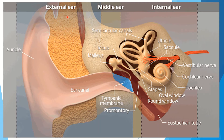This is the pinna, or ear lobe. It directs sound waves towards the auditory canal. This is the external auditory canal — it directs sound to the tympanic membrane. The tympanic membrane vibrates in response to sound and transmits vibrations to the auditory ossicles.